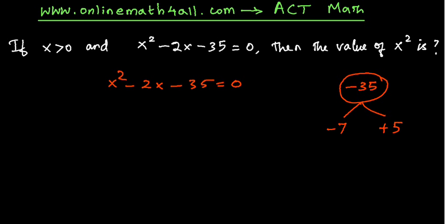Okay, now to get the two values of x, we have to do a simple work, that is, we have to take the opposite sign of the first factor as well as the second factor. That is, the two values of x are +7 and -5.